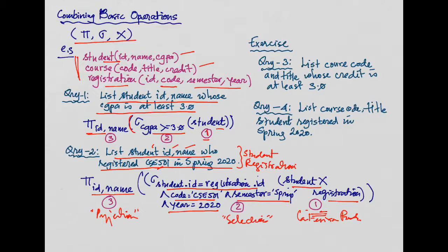Based on this, I suggest you try two exercises: query three — list course code and title whose credit is at least 3.0 (you only need to work with course) — and query four — list course code and title of students registered in spring 2020, which requires combining course and registration. I hope you practice these to become professional in relational algebra.